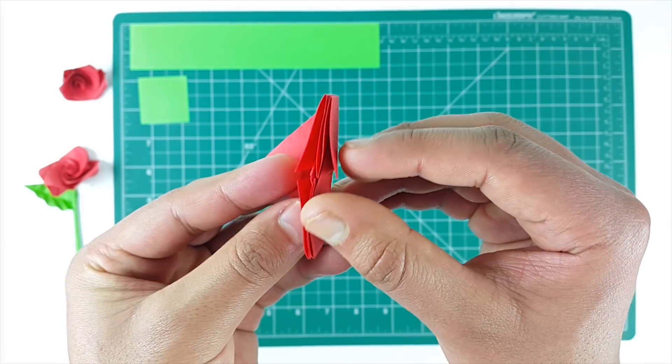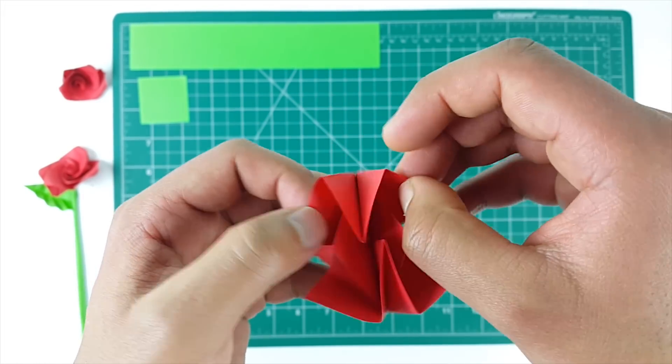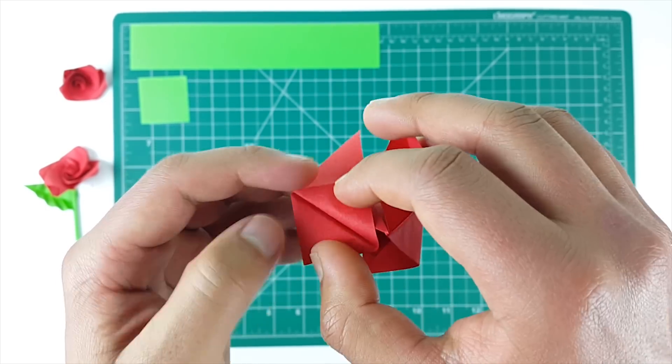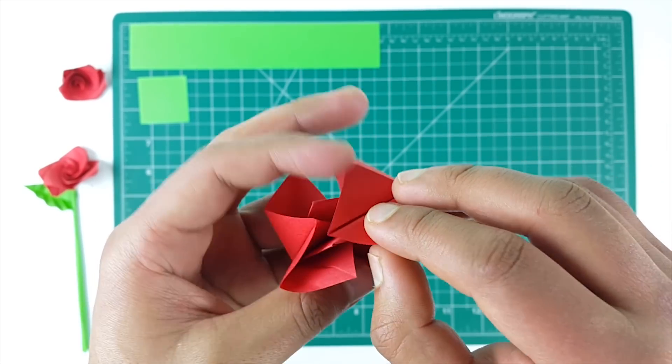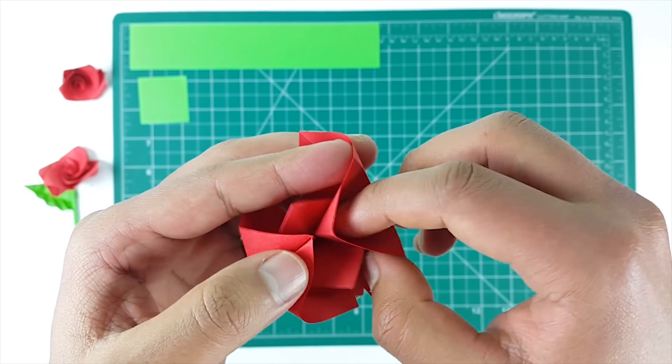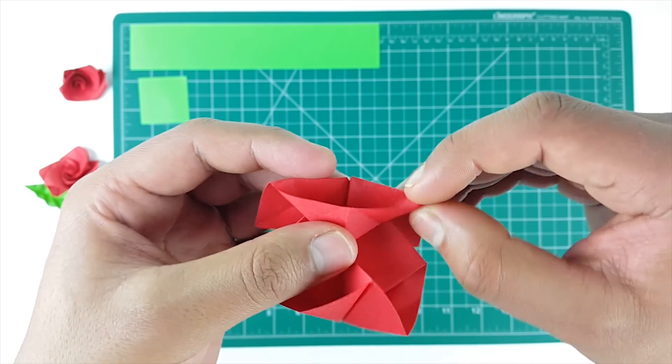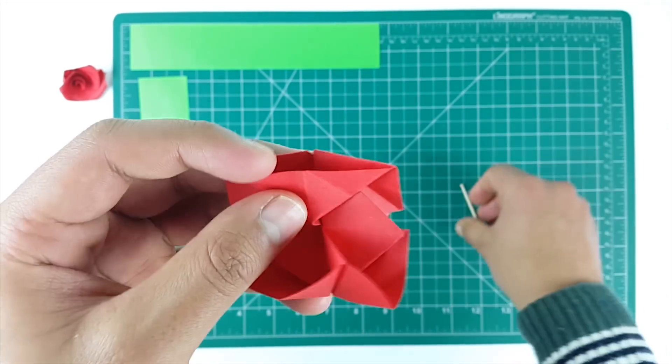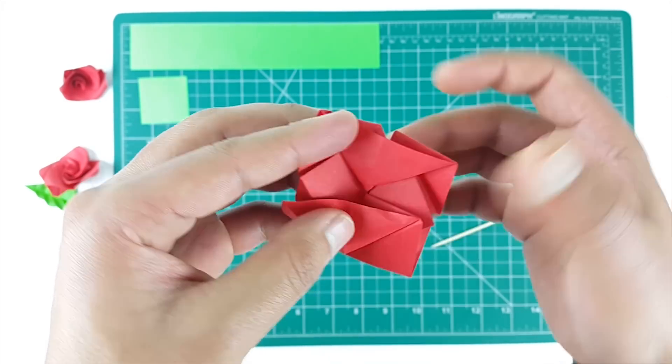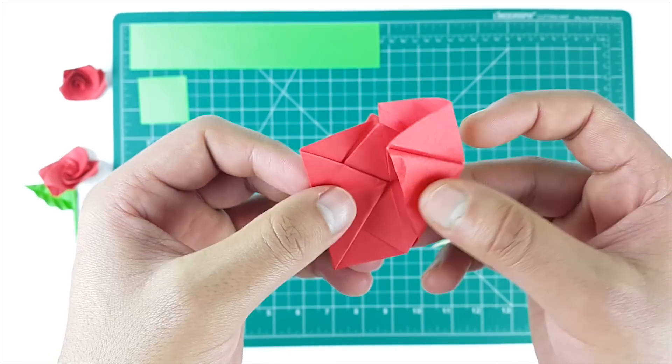Again repeat the same for the other side. Turn around and open these folds, insert your finger in this pocket and gently push the pocket downwards to reveal this triangular shape. Same for the other side.